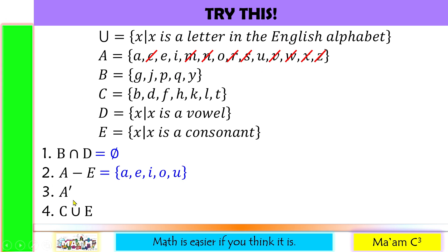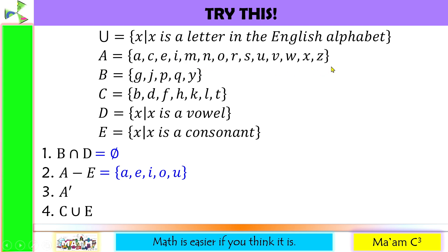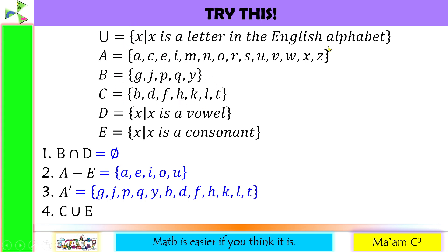Number 3: A prime. The elements found in the universal set but not in set A. The universal set is all letters of the English alphabet, and set A is the short letters. Therefore, the other letters — the fall letters and the tall letters — make up A prime: the elements found in the universal set but not in set A.